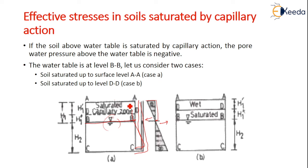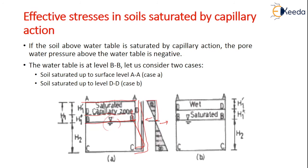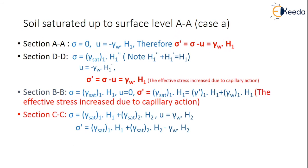The water table is at level BB as shown in the figure. We consider two cases: Case 1 — soil saturated up to the surface AA, and Case 2 — soil saturated only up to level DD. Let us deal with Case 1 first.